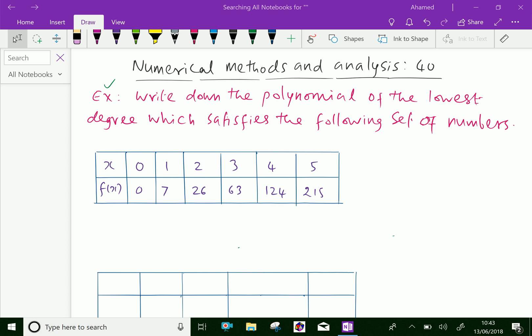Look at this example. Write down the polynomial of the lowest degree which satisfies the following set of numbers. X values is 1, 2, 3, 4, 5.